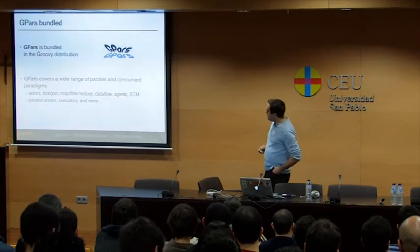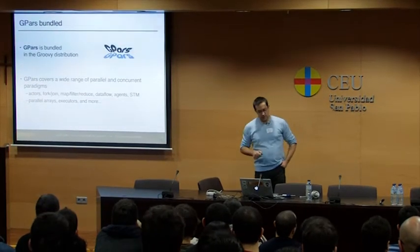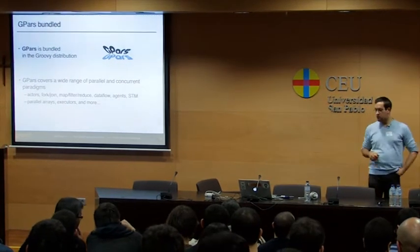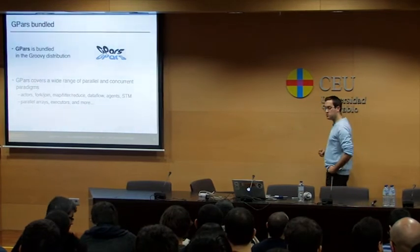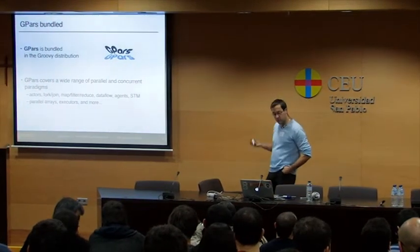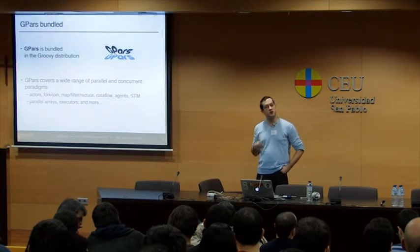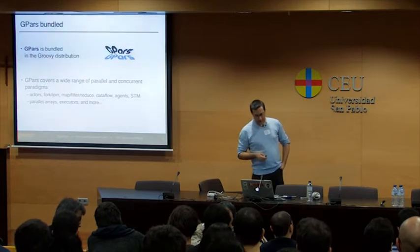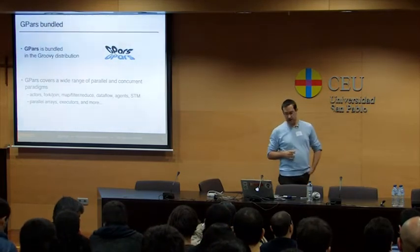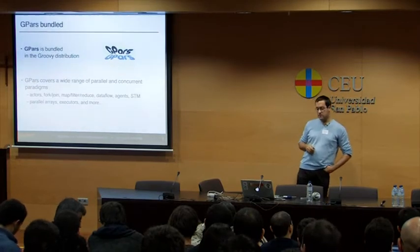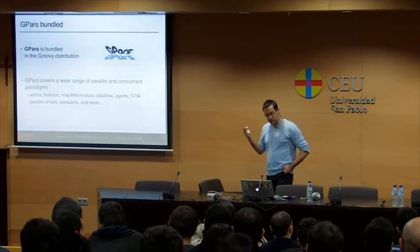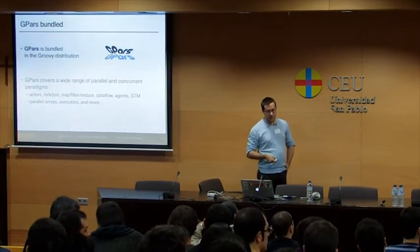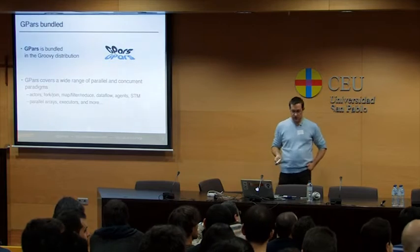We bundle GPars in the Groovy distribution. When you need to parallelize things or do things concurrently, GPars comes with a wide range of options: actors, fork/join, map/reduce, dataflow, and more. We also improved APIs for things like java.util.concurrent executors and parallel arrays. GPars is now bundled as part of Groovy, so don't hesitate to use it.